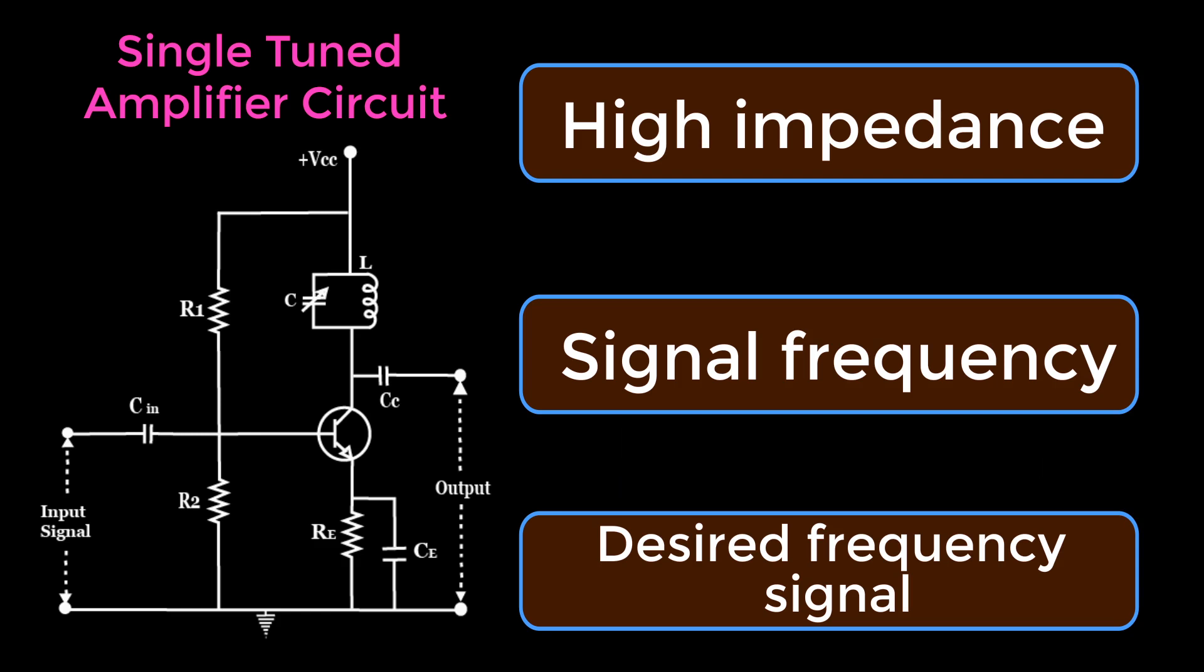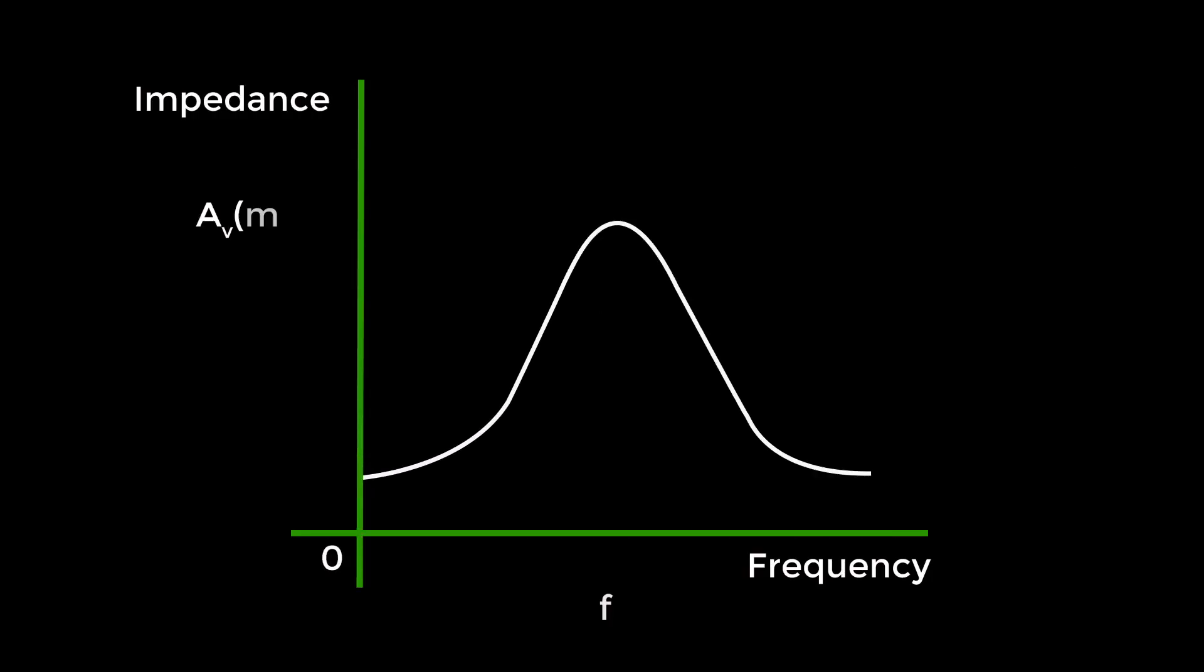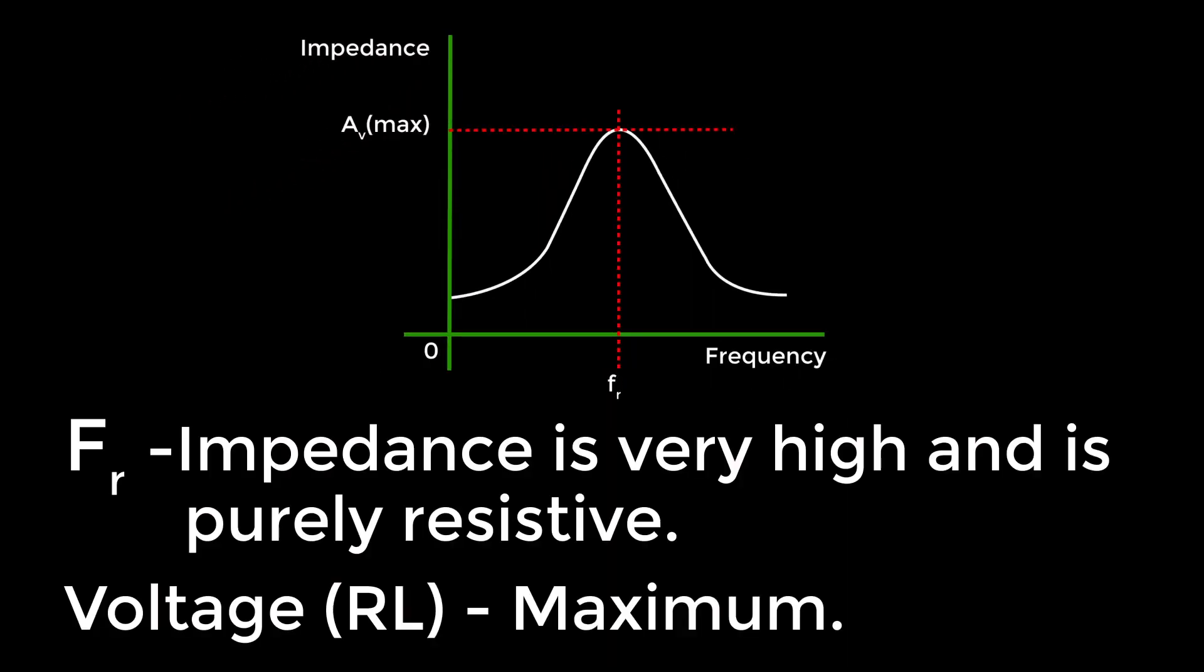Frequency response: The parallel resonance occurs at resonant frequency fr when the circuit has a high Q. The resonant frequency fr is given by fr = 1/(2π√LC). The following graph shows the frequency response of a single tuned amplifier circuit.